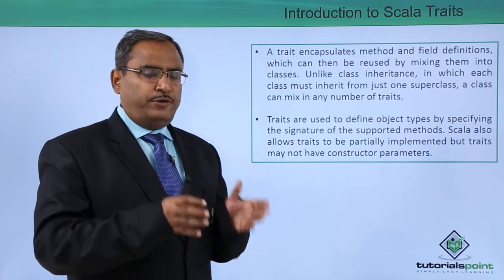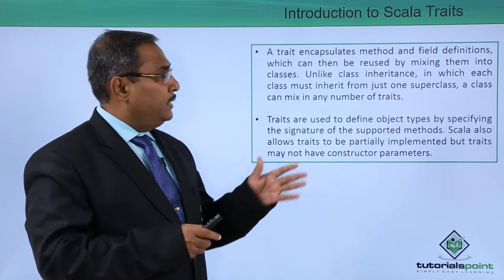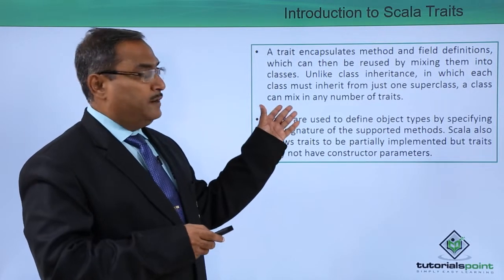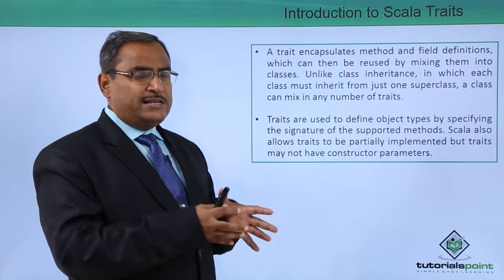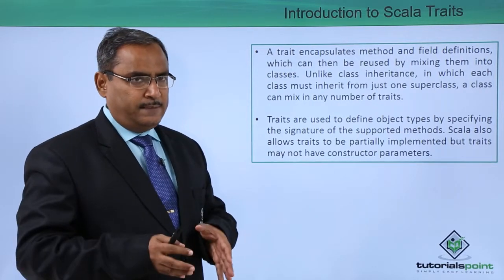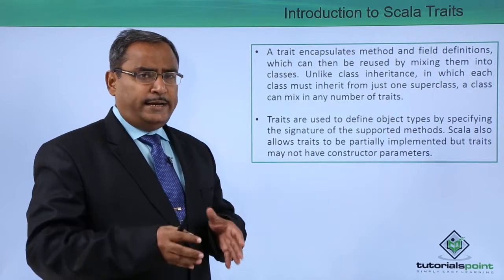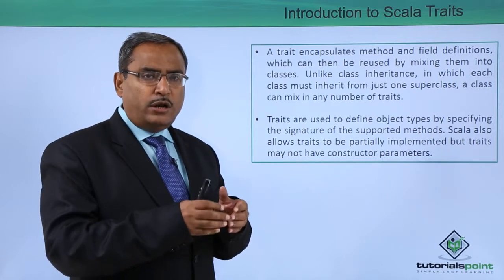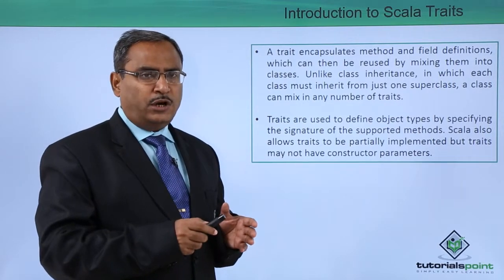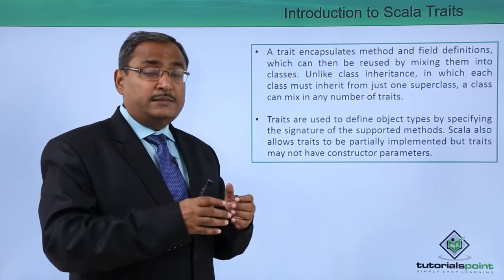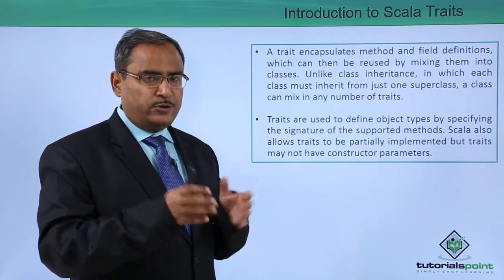In the case of traits, we have some methods and some variables. This particular trait can get mixed with classes. In case of class inheritance, a class can inherit only from one class. Multiple inheritance is not there, but a class can mix up with multiple traits if it is required to do so.